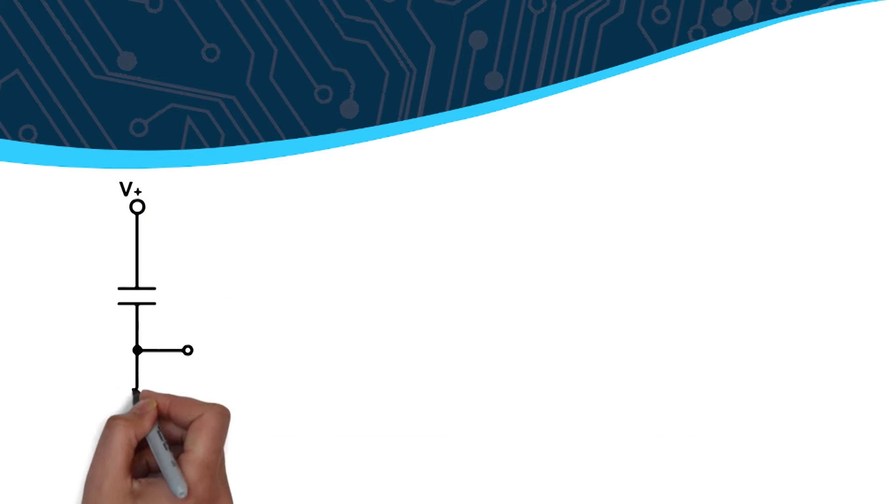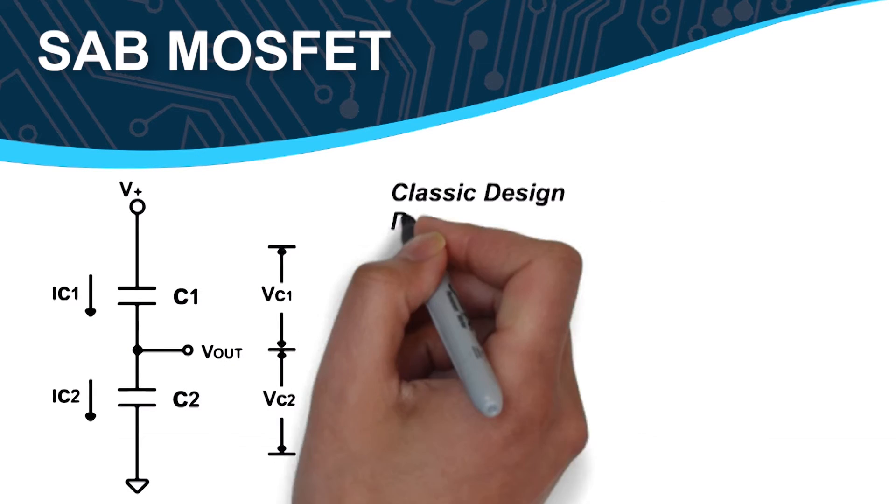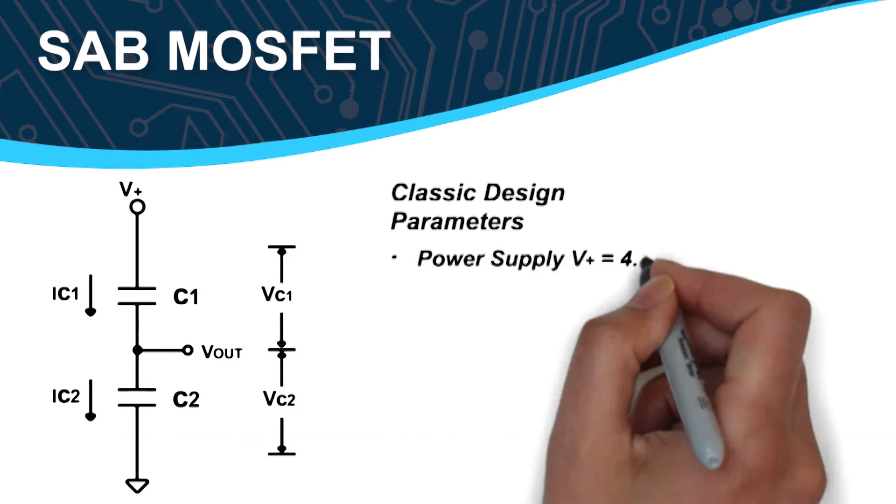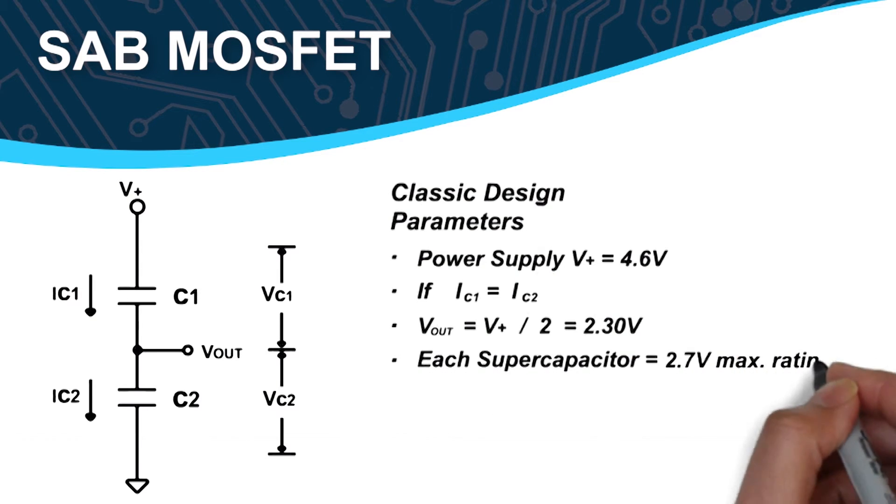There is a better way of controlling leakage current using an SAB MOSFET. It automatically balances the stack without any power, and in most cases it stops the current from leaking, which is most likely the reason your supercapacitor continues to fail.